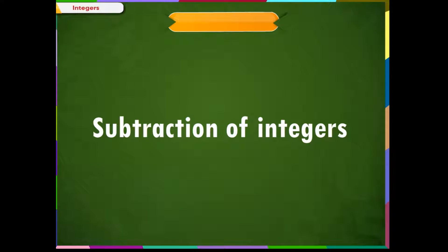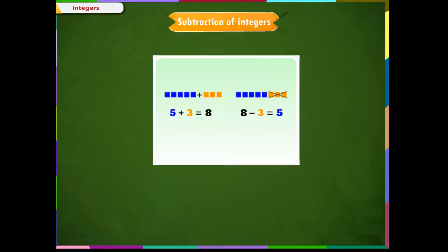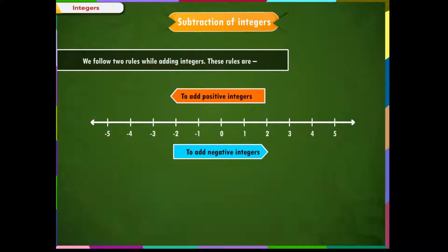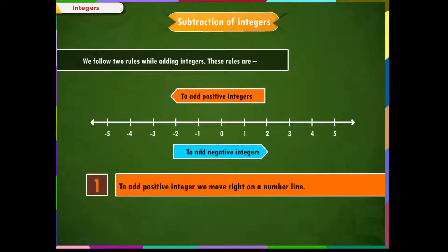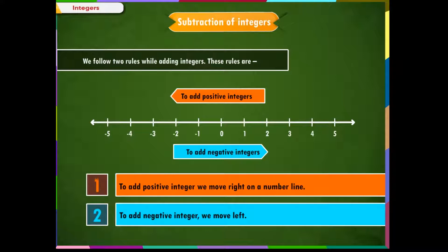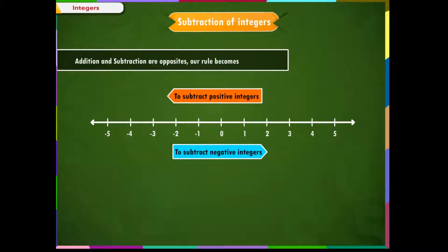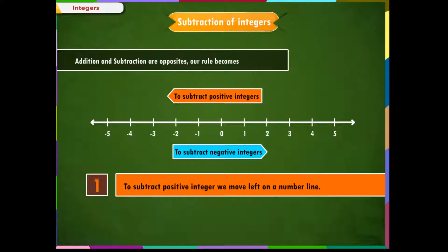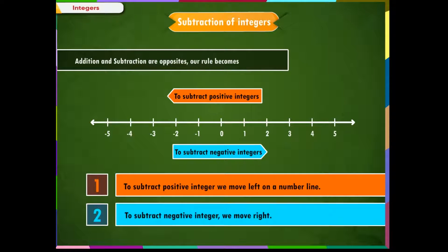Subtraction of Integers. We have studied that addition and subtraction are inverse operations — if 5 plus 3 equals 8, then 8 minus 3 equals 5. Since to add a positive integer we move right, and to add a negative integer we move left, and since subtraction is the opposite: to subtract a positive integer we move left on the number line, and to subtract a negative integer we move right.